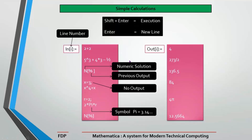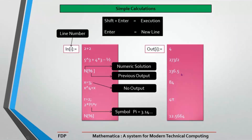There is a useful function — the percent sign (%) — which refers to the previous output. For example, if the previous output was 273/2, using % will recall that value. You can also wrap it with N[ ] to get a numerical result. Remember: the percent sign is for the previous output.